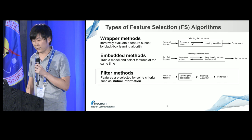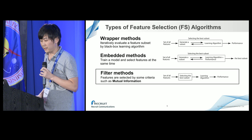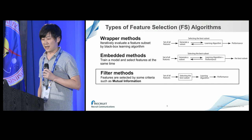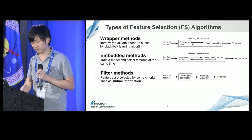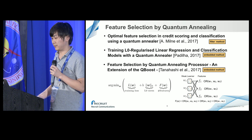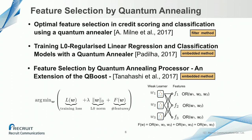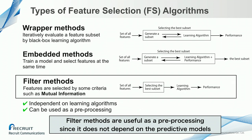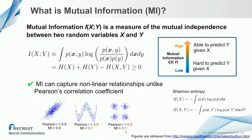Wrapper methods iteratively evaluate a feature subset by a black-box learning algorithm, and embedded methods train the model and select features at the same time. Filter methods select features by some criteria such as mutual information. There is also prior research on feature selection by quantum annealing. Last year, I presented an extension of the QBoost algorithm, where I added a feature term to the original QBoost formulation which induces a sparse feature subset — that is one of the embedded methods. But this time, I'm going to focus on filter methods, because they are independent of the learning algorithm, which means I can use this algorithm as a general preprocessing step in a data pipeline.